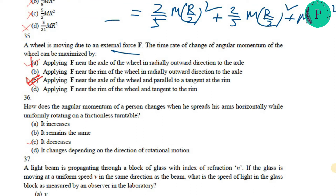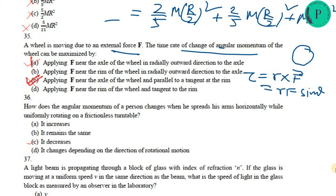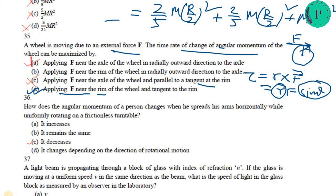For a wheel rotating under an external force, the question asks when the rate of change of angular momentum is maximum. The rate of change of angular momentum equals torque, which equals r × F = rF sinθ. Torque is maximum when sinθ = 1, i.e., θ = 90°, meaning the force must be tangent to the rim. So option D — applying force near the rim tangent to it — is correct.